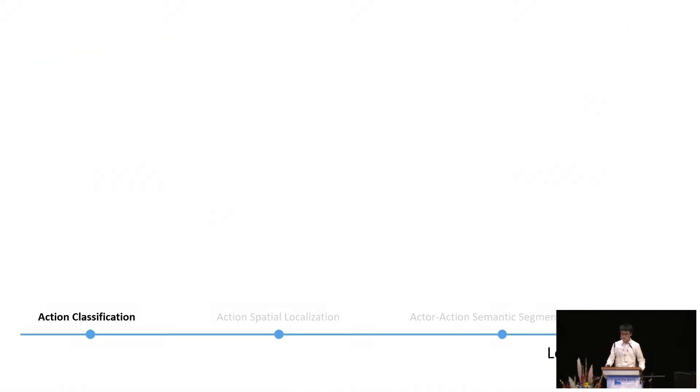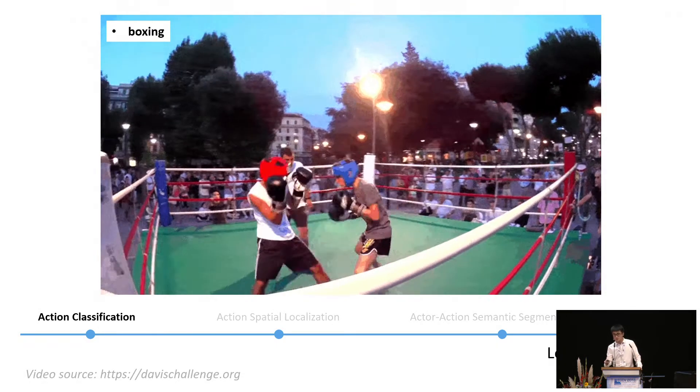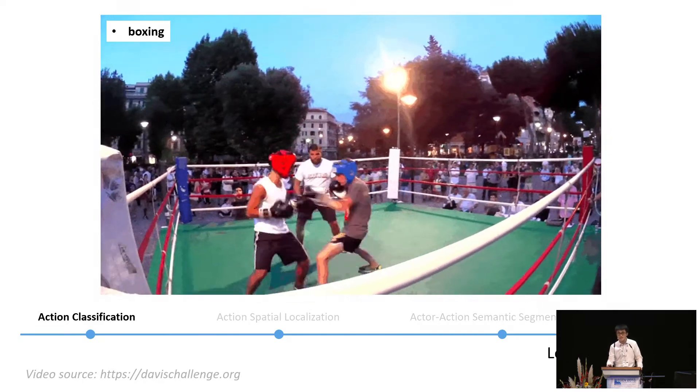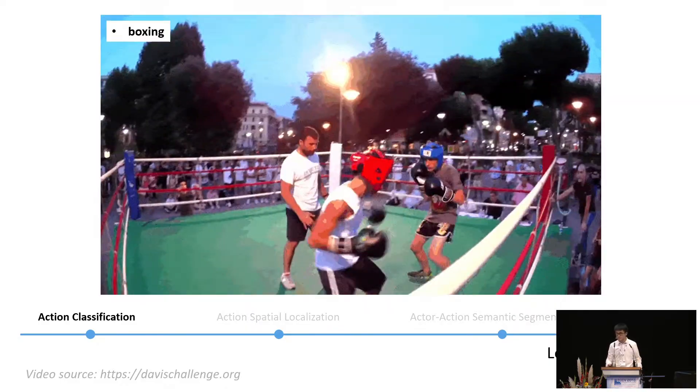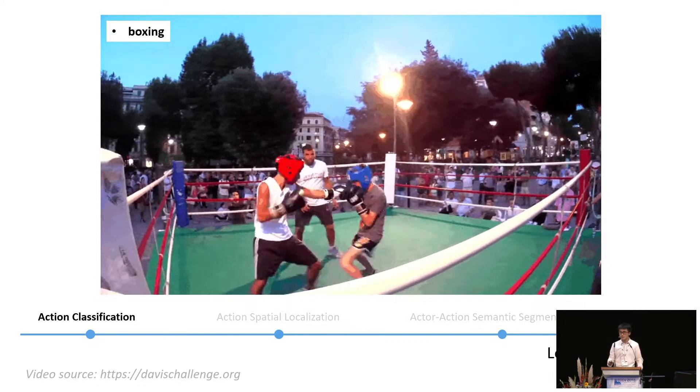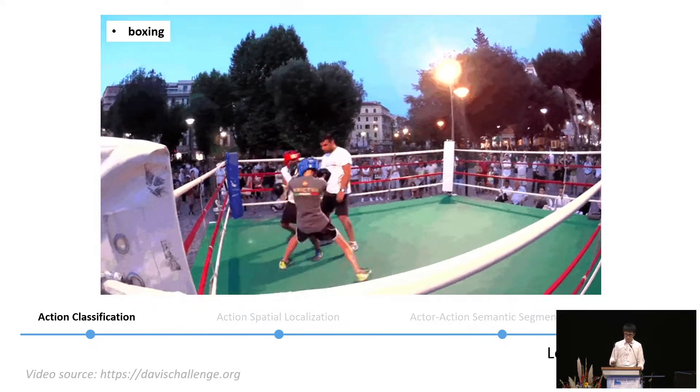In the field of vision understanding, research is moving towards the understanding of higher levels of detail. Early work in this domain tackled the problem of action classification. In this setting, the algorithms are given a short video clip and the goal is to output a single action label for the whole video clip. Here we show an example where the model should output the label boxing.